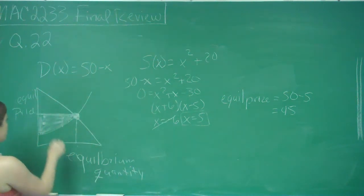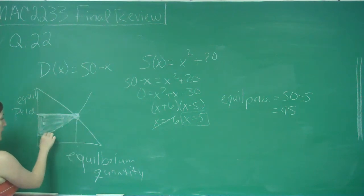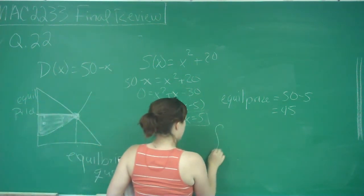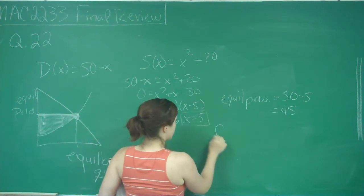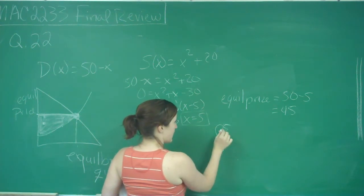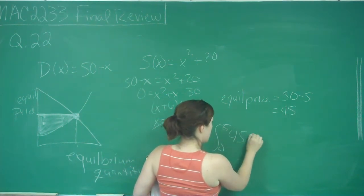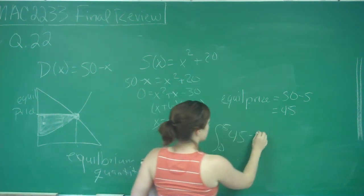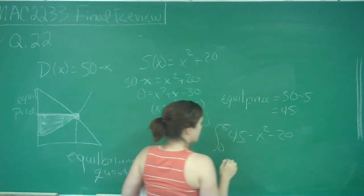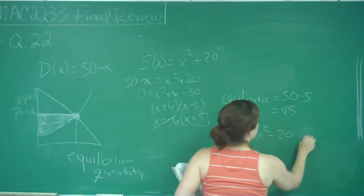So now to find the area that's in between our supply curve and our equilibrium price line, take the integral from where we start which is 0 all the way to my quantity which is 5 of 45 minus my supply curve which is x squared plus 20, dx.